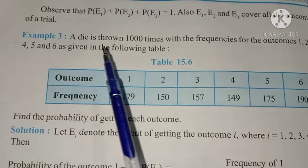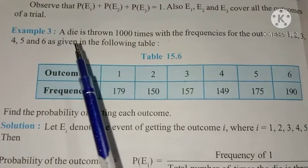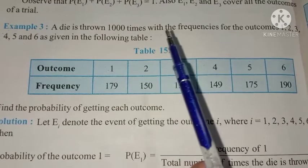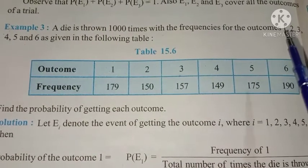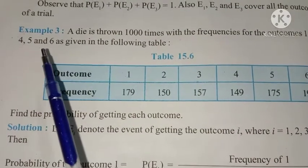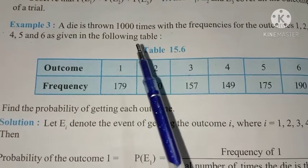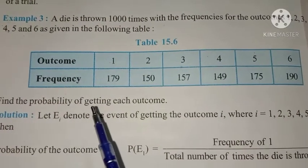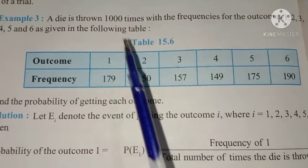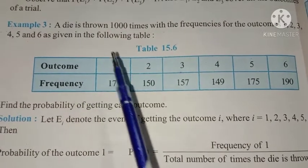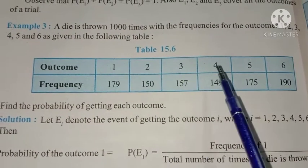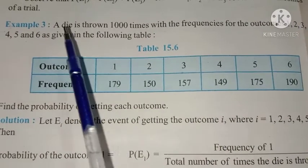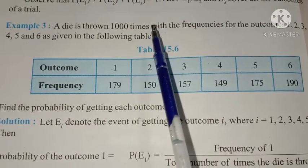Now let's see Example 3. A die is thrown 1000 times with the frequencies for the outcomes 1, 2, 3, 4, 5, 6 as given in the following table. Find the probability of getting each outcome. When a die is thrown, 1, 2, 3, 4, 5, 6 are the outcomes. Here a die is thrown 1000 times.